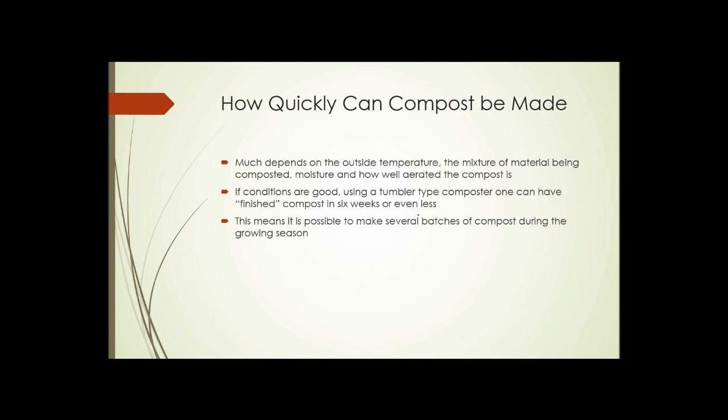So how quickly can compost be made? Well, much depends on the outside temperature and, as we talked about, the mix of materials being composted, the moisture, and how well aerated it is. If conditions are good using a tumbler type composter, one can have finished compost in six weeks or even less. This means it is possible to make several batches of compost during a growing season.